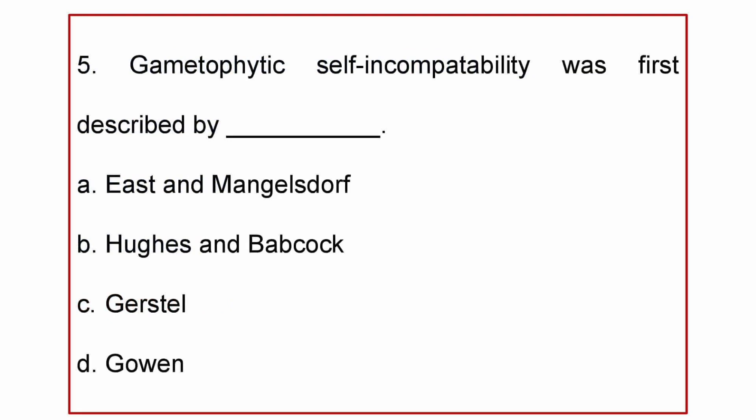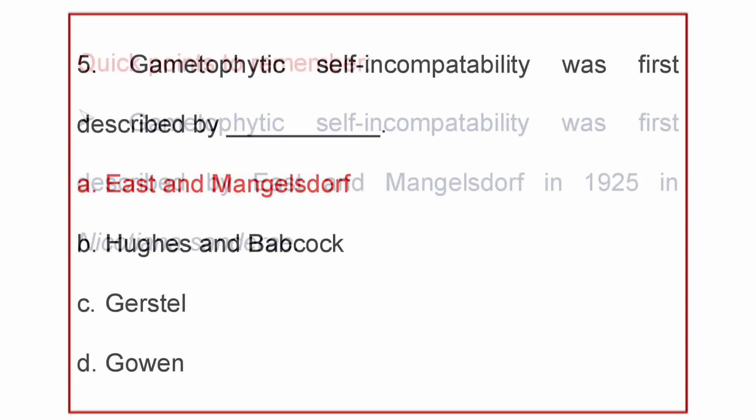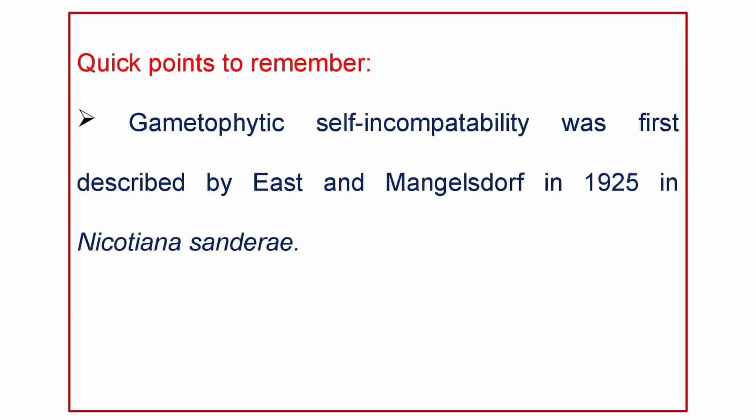Next question. Gametophytic self-incompatibility was first described by: A. East and Mangelsdorf, B. Hughes and Babcock, C. Gerstil, or D. Gowen. The answer is East and Mangelsdorf. Some quick points to remember: Gametophytic self-incompatibility was first described by East and Mangelsdorf in 1925 in Nicotiana sanderae.